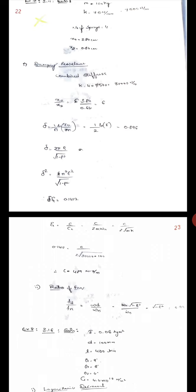Also, zeta is c by cc, or c by 2m omega n, or c by 2 root mk. So 0.1412 equals c upon 2 root of 100 into 30000. Therefore, the damping resistance is 489 newton second per meter.